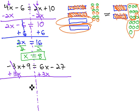The three positive x's and the three negative x's will subtract out, giving us nine, equals six x plus three x, or nine x, minus twenty-seven.